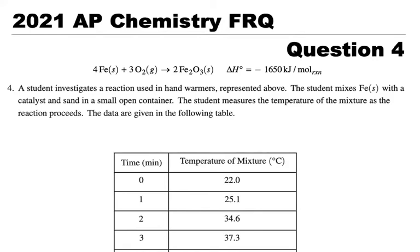We're looking at the 2021 AP Chemistry FRQ question number four. This is a four-point question. A student investigates a reaction in hand warmers by mixing solid iron with a catalyst and sand in a small open container. The student measures the temperature of the mixture as the reaction proceeds, and the data is given below.